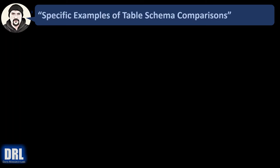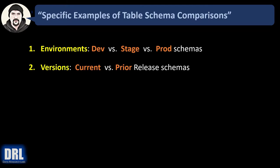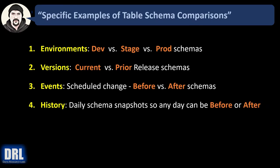Some specific examples of table schema comparisons — where you take schema snapshots, drop them to text files, and compare either over time or against different instances — are as follows. Number one: environments, compare dev to stage or stage to prod. Number two: versions/releases, compare current versus prior schemas. Number three: events, such as a data refresh that occurs on weekends — compare before versus after schemas. Number four: history — automate daily schema snapshots by scheduling the script to output results to a text file, giving you say 60 days of historical snapshots to use for before-versus-after comparisons.